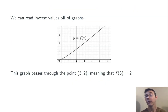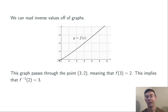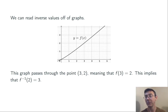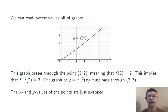We can read inverse values off of graphs using that knowledge. For example, here's a plot of a function that passes through three comma two, meaning that f of three is equal to two. Using the definition of an inverse function, this means that f inverse of two must be three — just swapping the input and output values. And therefore, the graph of y equals f inverse of x has to pass through two comma three. Always remember: inverse functions swap the inputs and outputs, the x and y values of the original function.